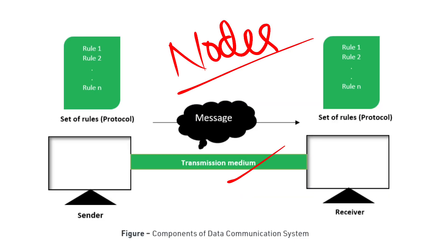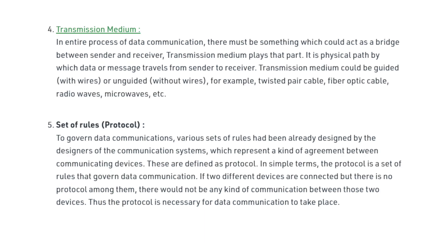The transmission medium is the physical path between the sender and receiver. In data communication, there must be something which acts as a bridge between the sender and receiver. Transmission medium could be guided with wires or unguided without wire. Examples include twisted pair cables, fiber optic cables, radio waves, and microwaves.